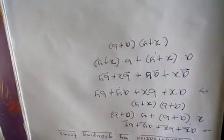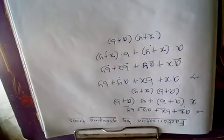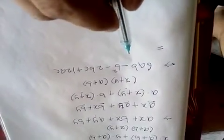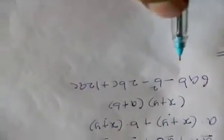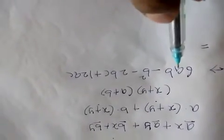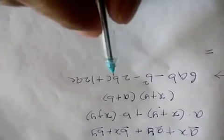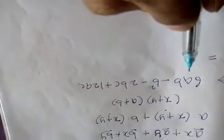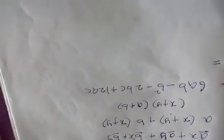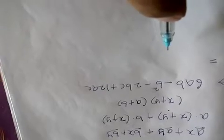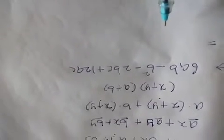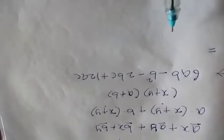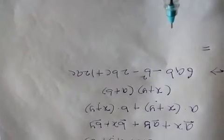Now let us take another problem. Observe: in these four terms — 6AB minus B square minus 2BC plus 12AC — what are the common factors? You have to find which two terms have a common factor, then regroup the terms.